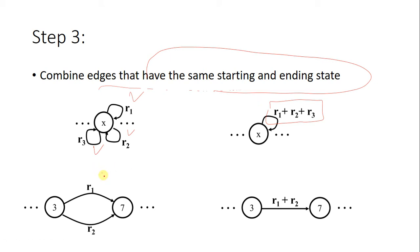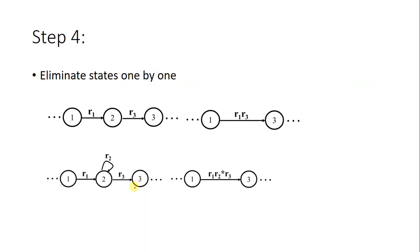In Step 4, we eliminate states one by one. While eliminating states, you come across edges which are in series. When you eliminate a state, you concatenate the strings or input letters — so instead of a plus sign, you concatenate (take the product). For example, when you remove a state, it becomes R1 concatenated with R3.